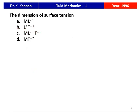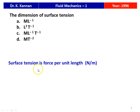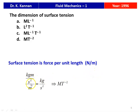Next question, also from 1996: the dimensions of surface tension — options are M L⁻¹, L²T⁻¹, M L⁻¹T⁻¹, or M T⁻². Surface tension is force per unit length, so the unit is Newton per meter. Newton is kg·m/s², divided by meter gives kg/s², which is M T⁻². Therefore the correct answer is M T⁻².